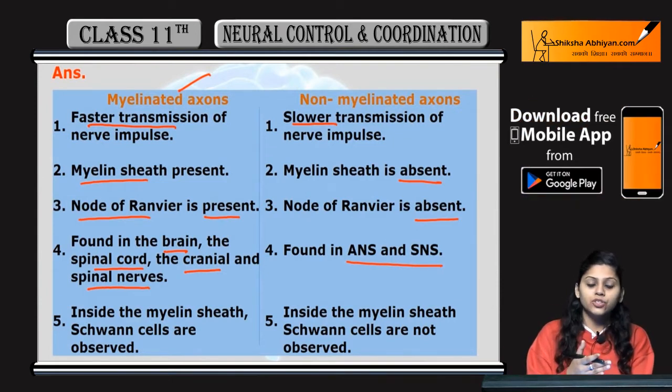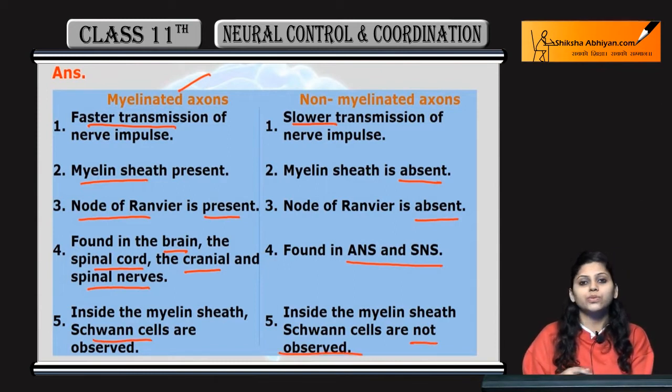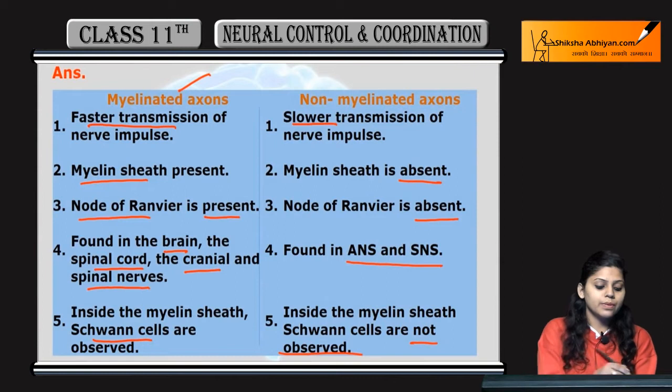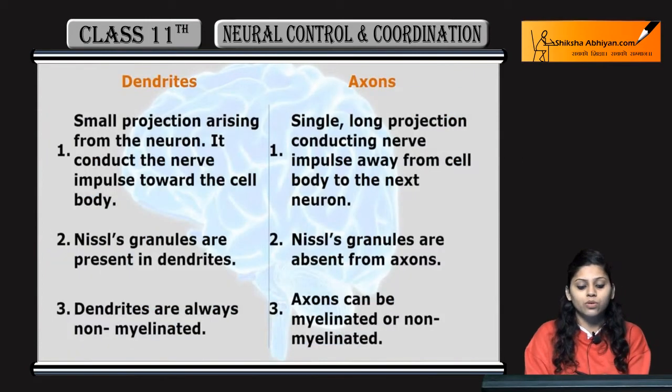Point 6: Inside the myelin sheath, Schwann cells are observed, whereas no Schwann cells are present in non-myelinated axons.